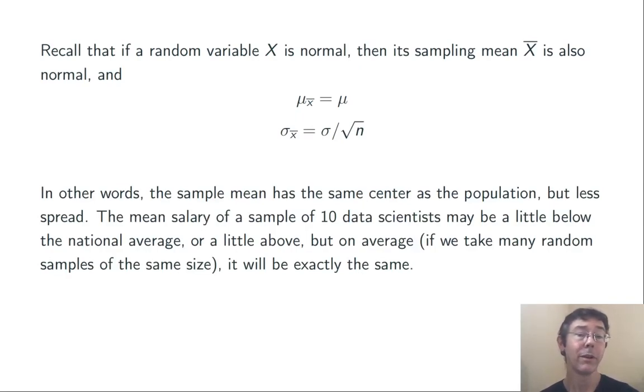What this is saying in our present example is that the mean salary in a sample of 10 data scientists, that sample mean, could be a little bit below the national average or a little bit above. But if we take those samples of size 10 many, many, many times, on average, we'll get exactly the population mean.